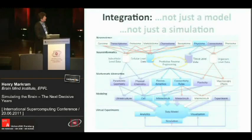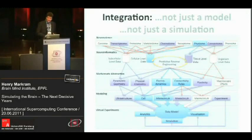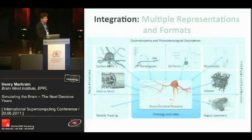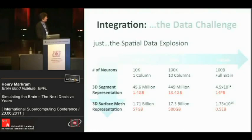It's not just a model, it's not just a simulation. To do this, you have to do a global integration — you have to integrate all the nearest signs from the genes all the way up to the phenotype, the emergent behaviors. You have to database this information. We apply predictive reverse engineering to look for rules and patterns and to make predictions to help specify the details of the brain. You have mathematical abstractions that go across all levels, you have to build models of all the different levels, and you have to have the capability to do virtual experimentation. There are multiple representations, which explodes the data space that you need.